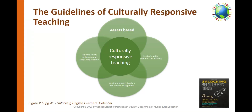When educators describe the varying characteristics of culturally responsive teaching, Unlocking English Learners' Potential has synthesized these ideas into four overarching guidelines that overlap with one another. Guideline one: culturally responsive teaching is asset-based. Guideline two: it places students at the center of learning. Guideline three: it values students' languages, cultures, and backgrounds. Guideline four: it simultaneously challenges and supports students. We will take a look at just two of these guidelines in depth throughout this presentation.